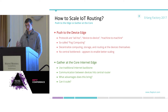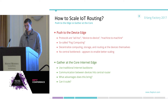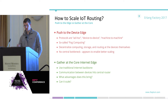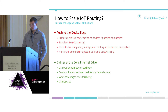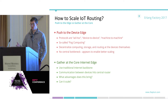The other approach is to continue to extend the routing from the core internet, which uses the traditional internet backbone, where all communication — even between physically proximate devices — has to hit a central router. I'm going to talk about what advantages that brings and whether it's feasible to actually scale the core internet routing infrastructure for the IoT.